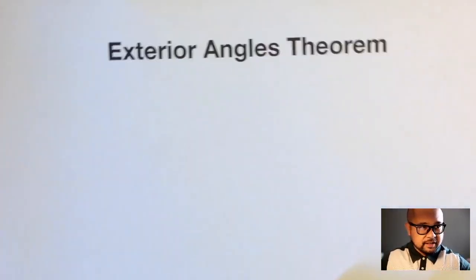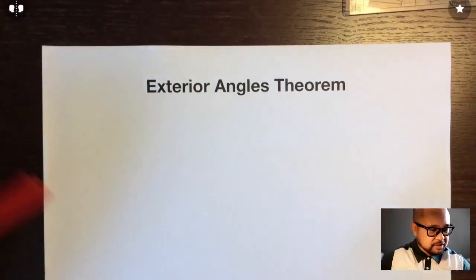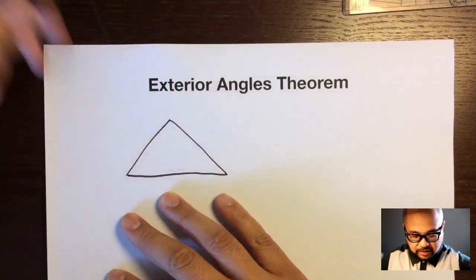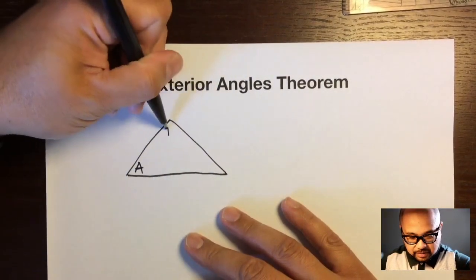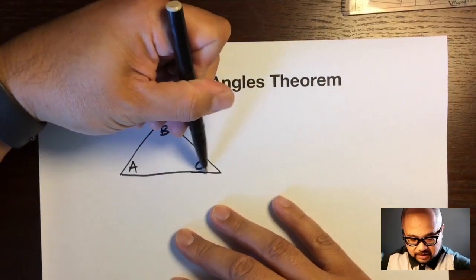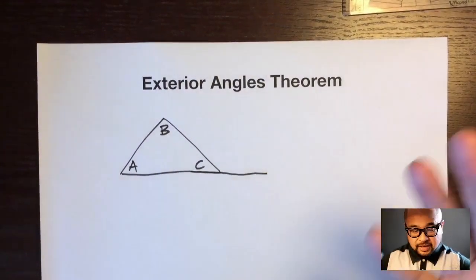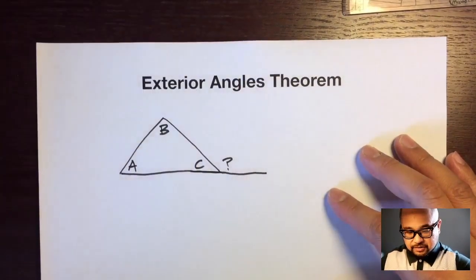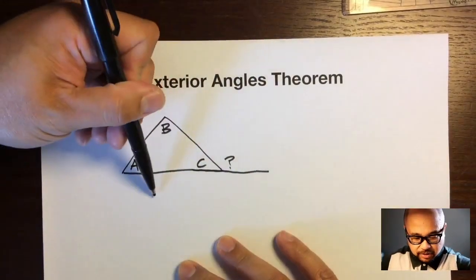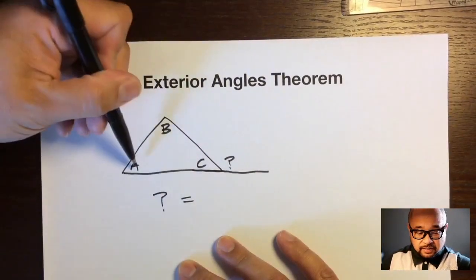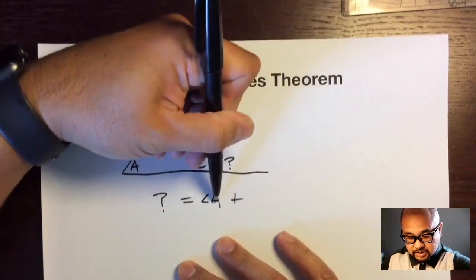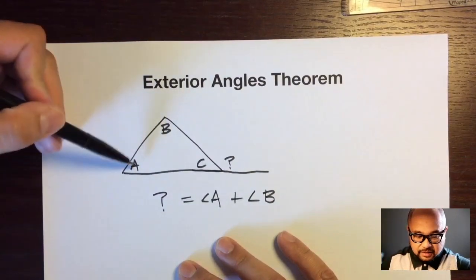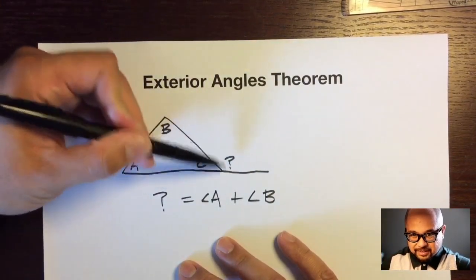Here's the Exterior Angles Theorem — please put this in your notes. Everyone draw a triangle with its interior angles, call them A, B, and C, and extend that line to create an exterior angle. The exterior angle equals the sum of angle A plus angle B. That's it. This plus this adds up to this — exterior angles theorem.